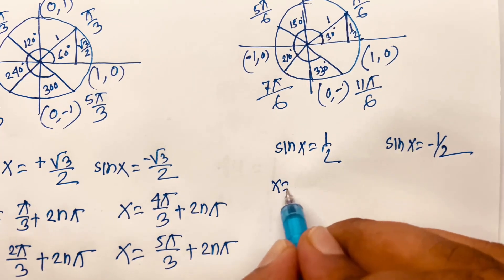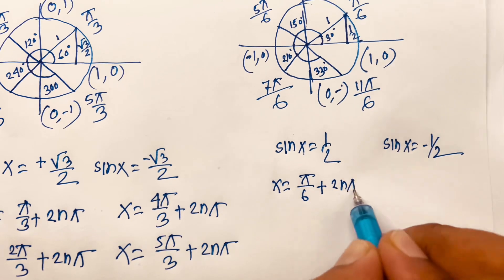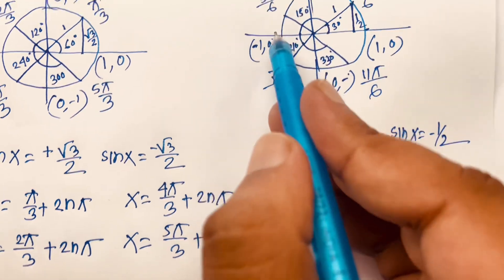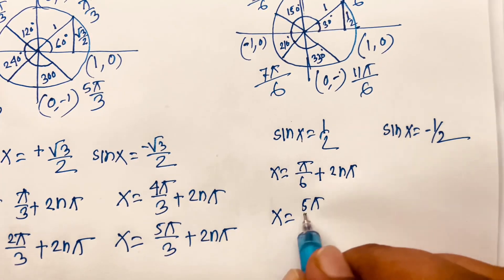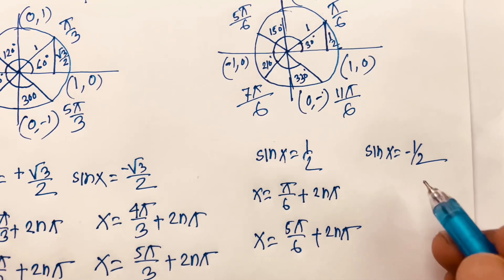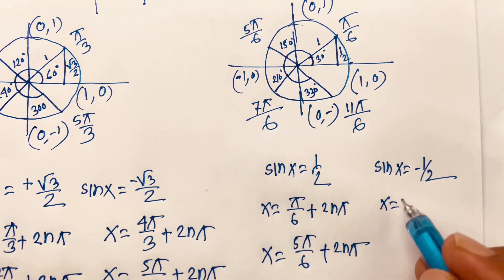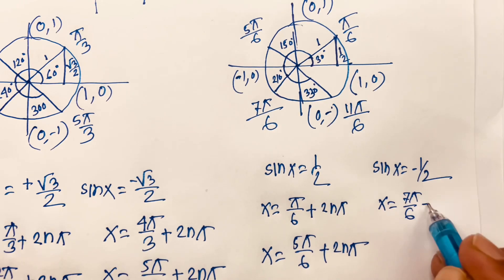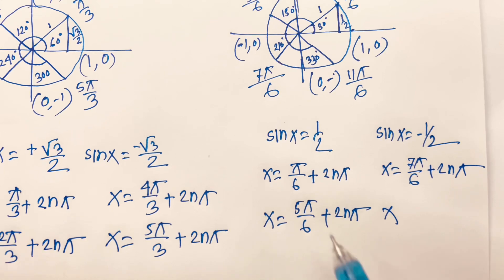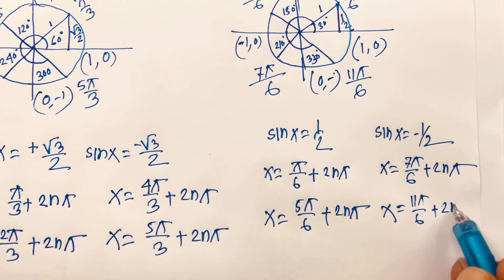When sin x equals positive half: x equals pi over 6 plus 2n pi, and x equals 5pi over 6 plus 2n pi, where n is an integer. When sin x equals negative half: x equals 7pi over 6 plus 2n pi, and x equals 11pi over 6 plus 2n pi.